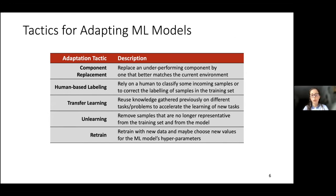Some of the adaptation tactics we describe include — I'll highlight here the retrain tactic, which is the most intuitive one. It basically corresponds to retraining the machine learning model with new data that represents the new task we want to learn. For example, in the case of a new fraud pattern, we envision retraining the model with transactions corresponding to that new fraud pattern so that those features are now taken into account by the model.